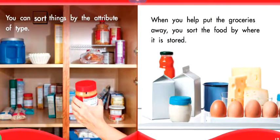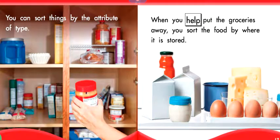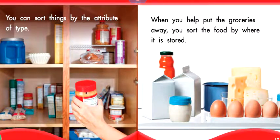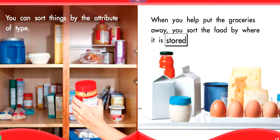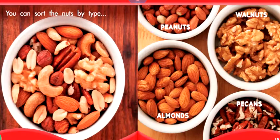You can sort things by the attribute of type. When you help put the groceries away, you sort the food by where it is stored. You can sort the nuts by type.